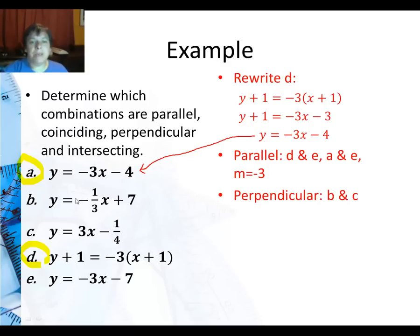Perpendicular would be reciprocal. So I need, the only fraction I have here is negative one-third. And when I go to the negative reciprocal, that gives me positive three. So only lines b and c are perpendicular. Coinciding, we already discussed, that's line a and d.